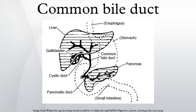The common bile duct, sometimes abbreviated CBD, is a tube-like anatomic structure in the gastrointestinal tract of organisms that have a gallbladder. It is formed by the union of the common hepatic duct and the cystic duct.